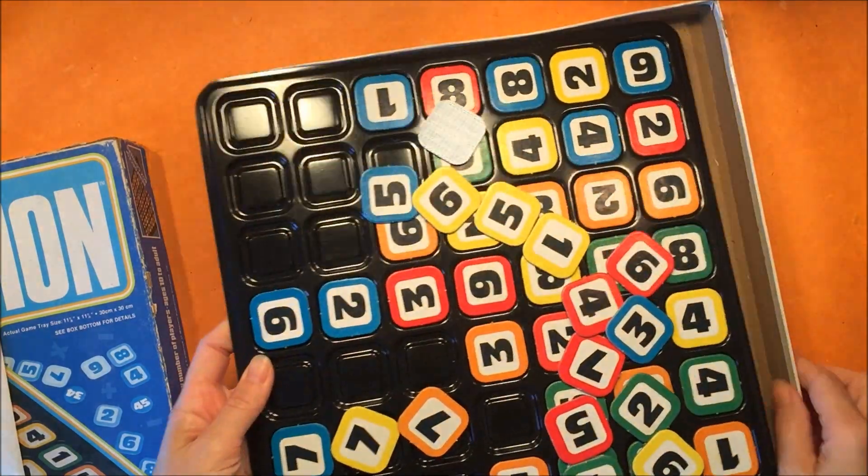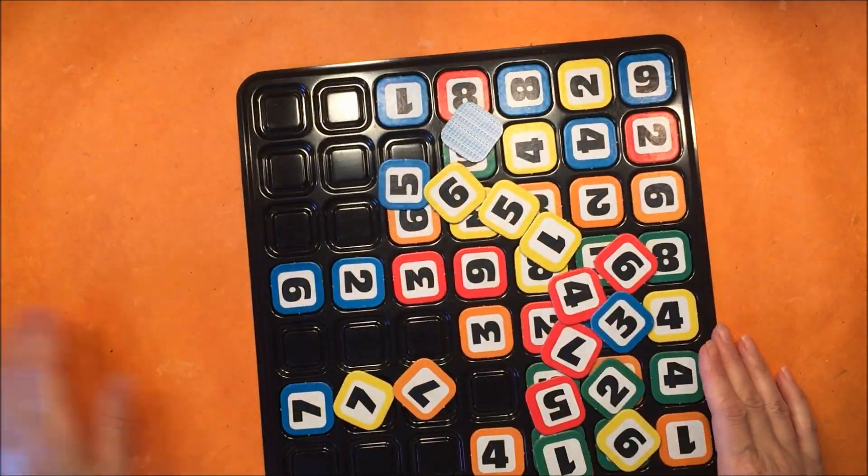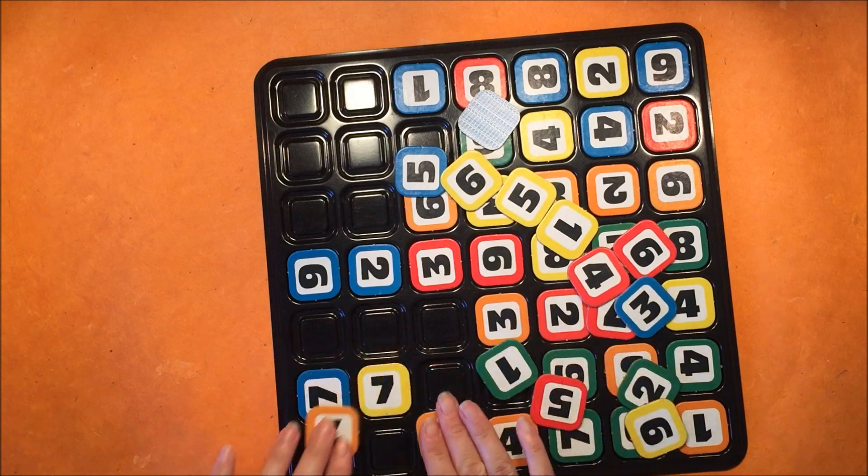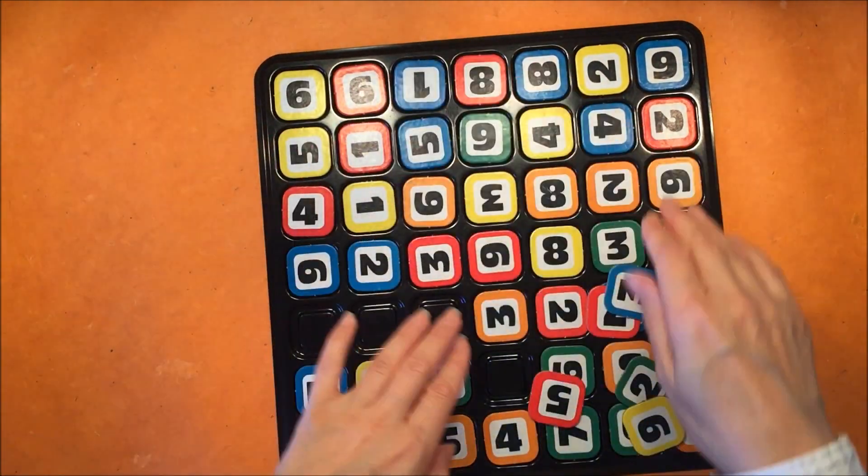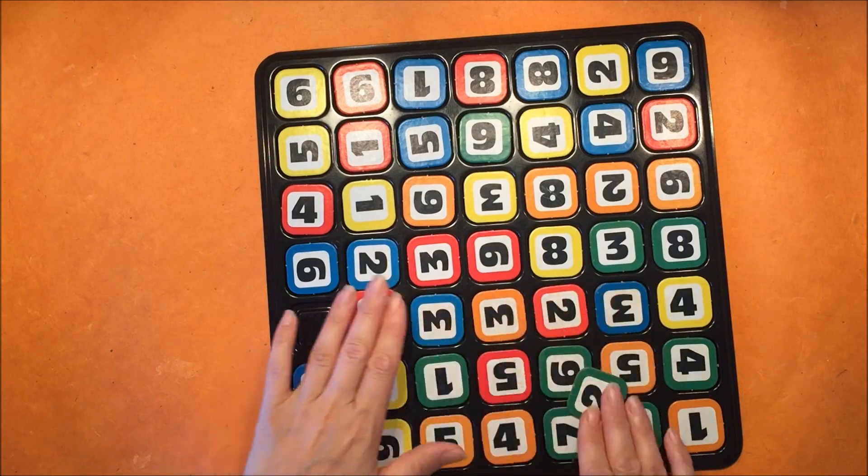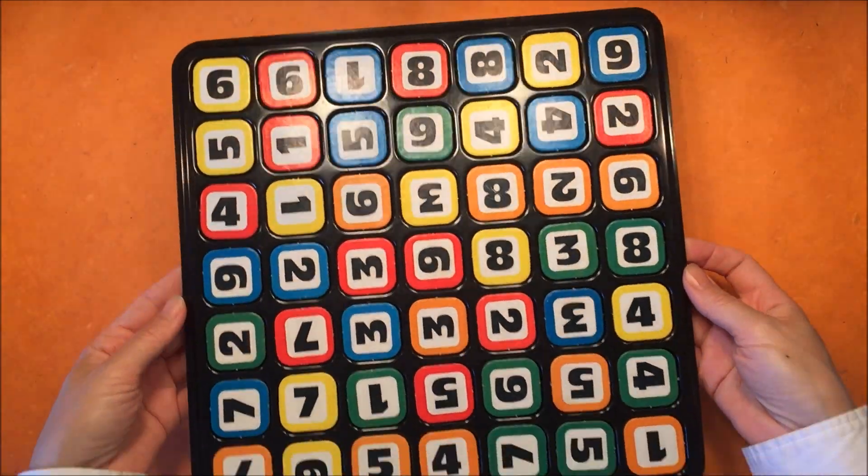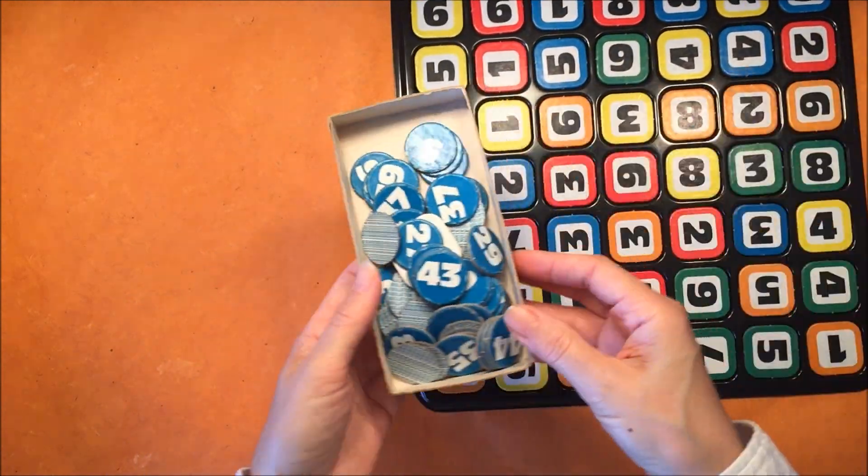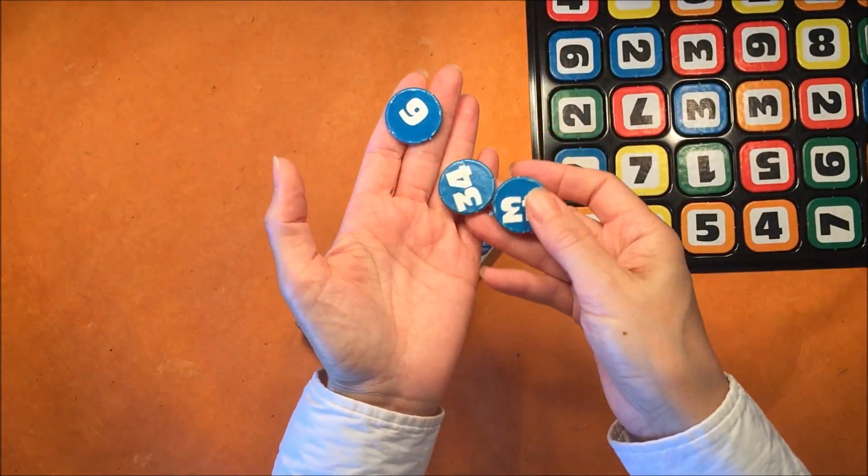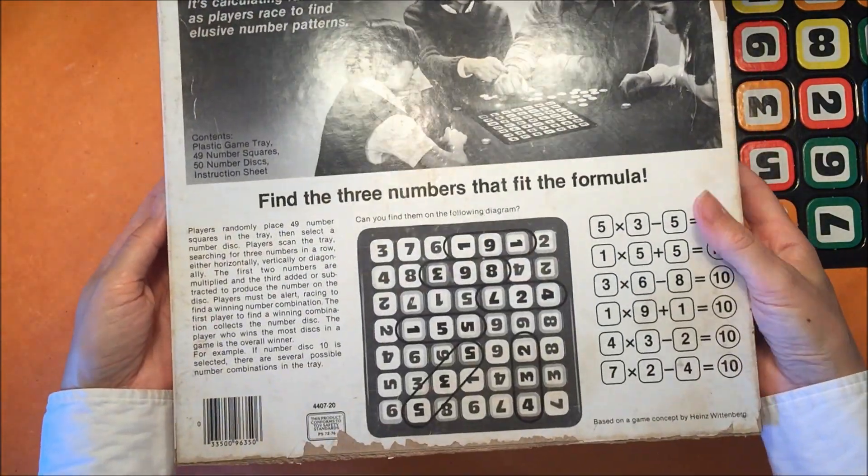It comes with this plastic tray that can hold 49 little tiles with numbers marked 1 through 9 on it. And the 6 and the 9 are interchangeable, and it's quite thin. And it also comes with these little tiles that have the numbers 1 to 49 on them as well.